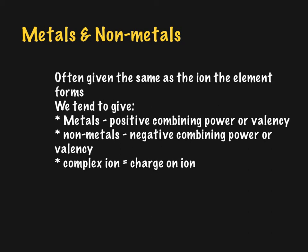And I've asked you to learn, or you've been asked by your teacher to learn, some complex ions. Some common complex ions. And again, that follows through. Their combining power or valency will be the same as the charge on the ion. So something like nitrate, which is a one minus charge, has a valency of one minus. And it's treated like a non-metal. That becomes important.